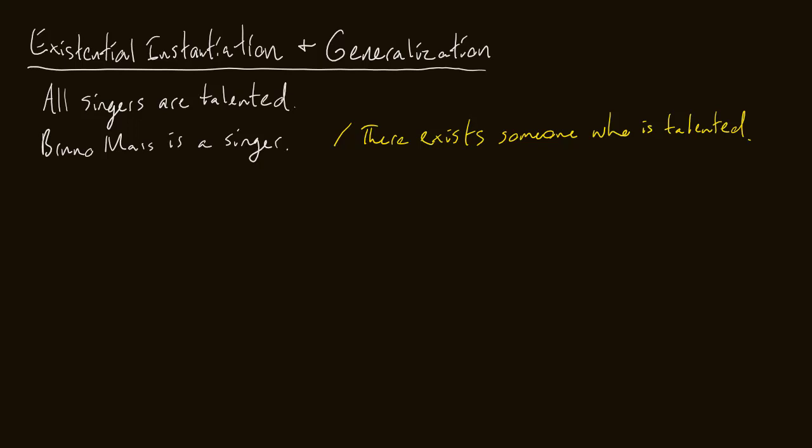Today we're going to talk about existential instantiation and generalization. First, we're going to do an example of generalization because it's easier. Then we'll do an example of instantiation, and hopefully those two examples should be enough to get the point across.